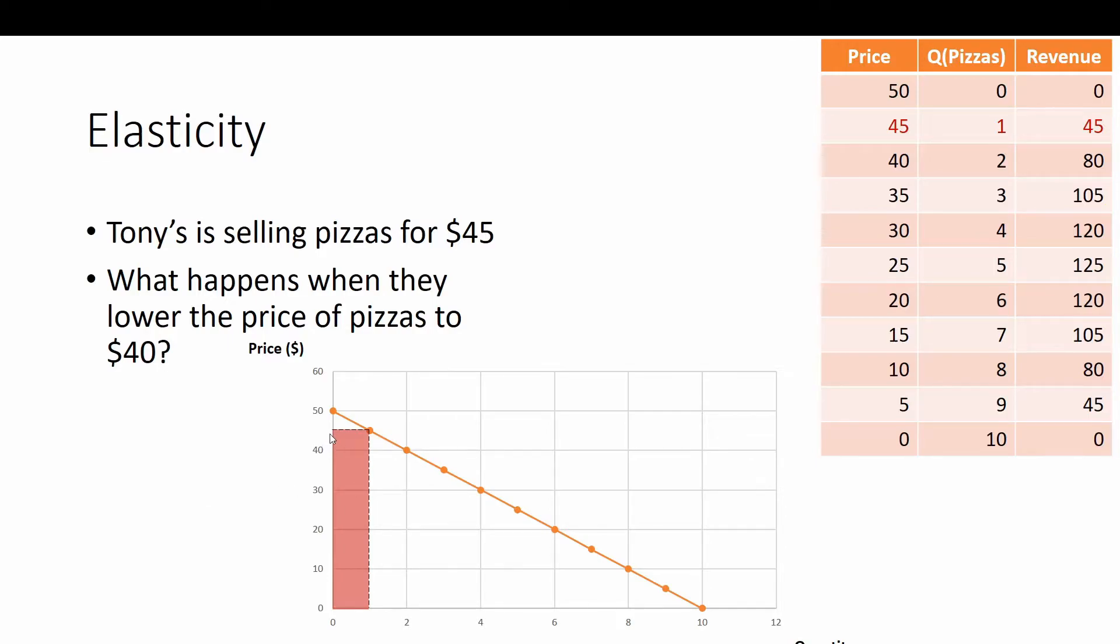We set the price up here to $45. We're going to walk over here and see that our quantity demanded will be 1. We also see that up here in our demand schedule. The price is $45, the quantity of pizzas demanded is going to be 1, and our revenue will be $45. So the area of this rectangle will be our revenue.